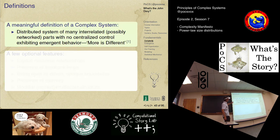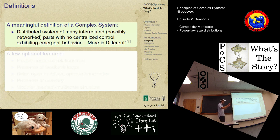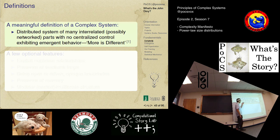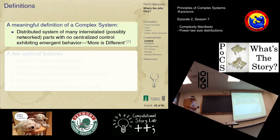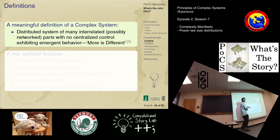Here's a reasonable definition: a distributed system of interrelated, possibly networked parts with no centralized control — or limited centralized control — exhibiting some kind of emergent behavior. Emergent behavior means the whole is not simply equal to the sum of the parts — that's linear algebra. There's a great framing for this: 'more is different.' This is a paper by Anderson.